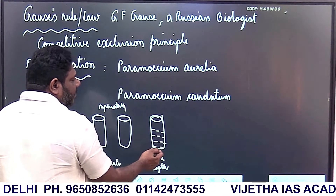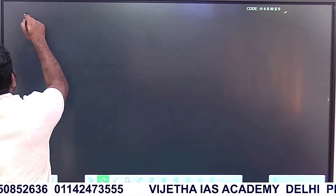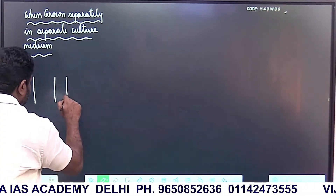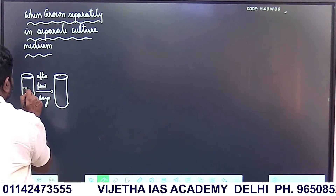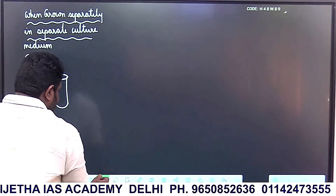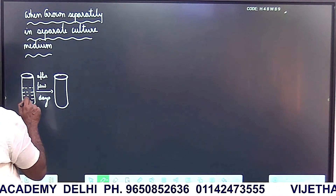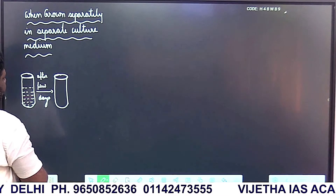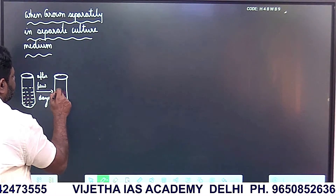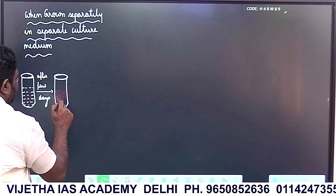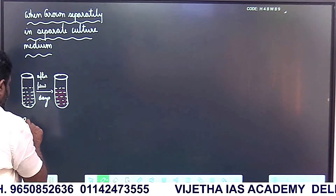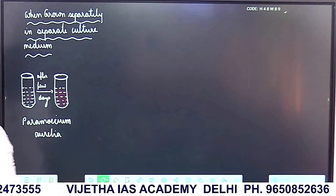Food and space are the same for both. After a few days, Paramecium aurelia reproduced and produced a large number of aurelia. This is the situation for Paramecium aurelia when grown separately in a separate culture medium.